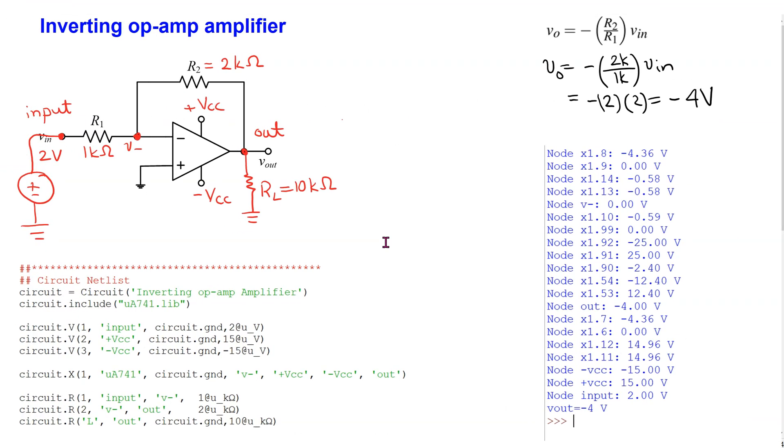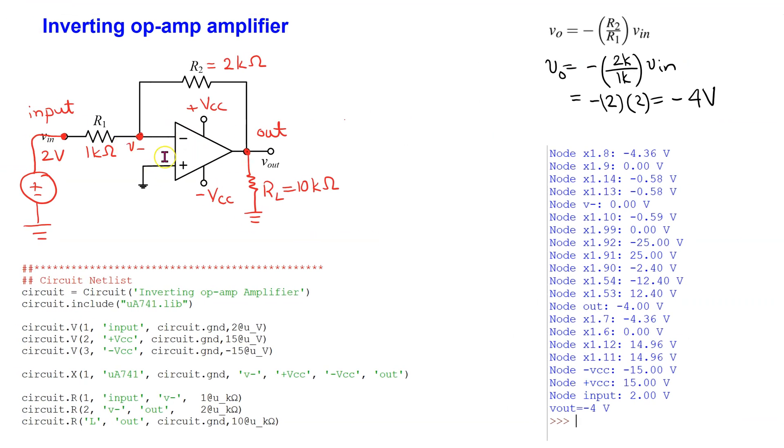Similarly, we can simulate inverting op-amp amplifiers. The circuit netlist is shown here. In this case, the positive input pin of the op-amp is connected to circuit ground. The negative input pin of the op-amp is connected to the V-minus node and so on. When we simulate, we can verify that the simulated output voltage matches with the theoretical prediction.